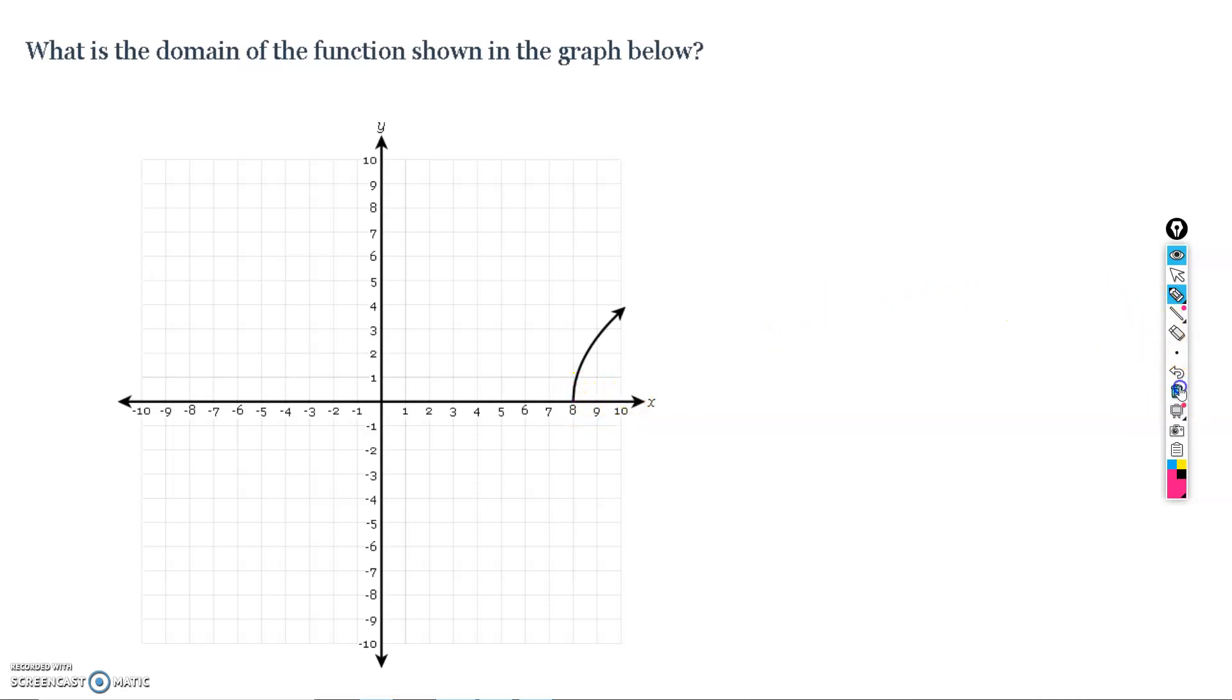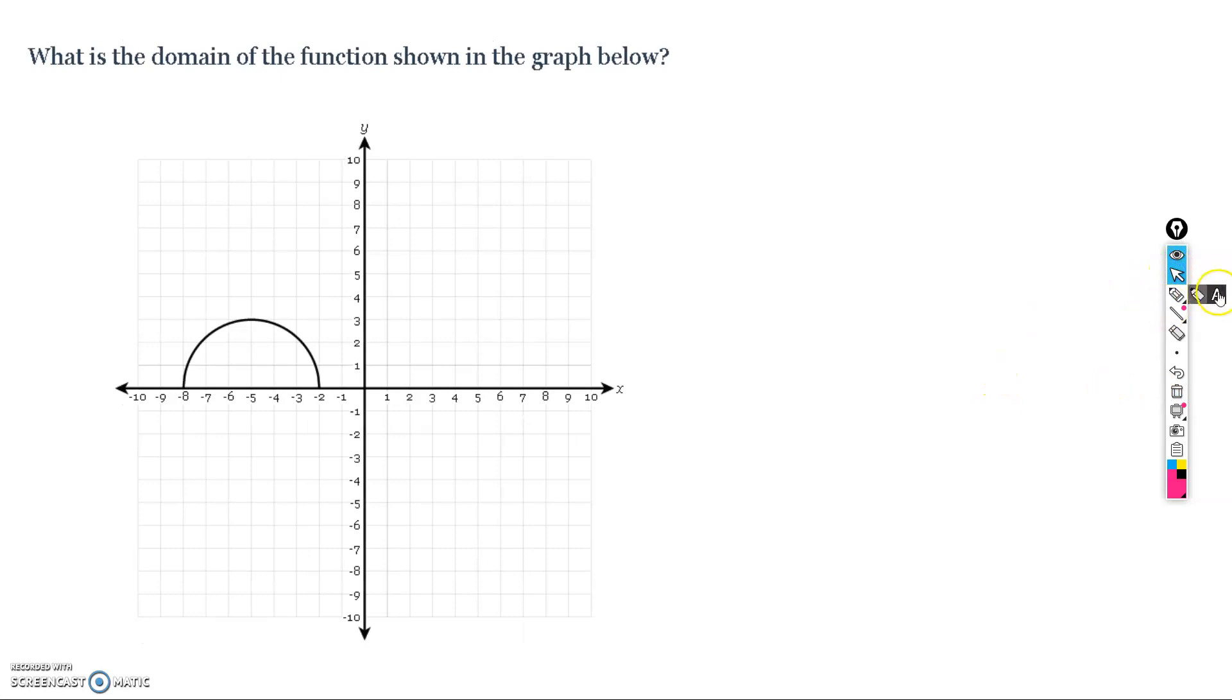All right. One more. Let's see the domain of this semicircle. So, this guy, again, is not coming in from negative infinity. The function, again, this function looks like it's starting at negative 8. So, the leftmost point is negative 8, and it looks like it's touching.